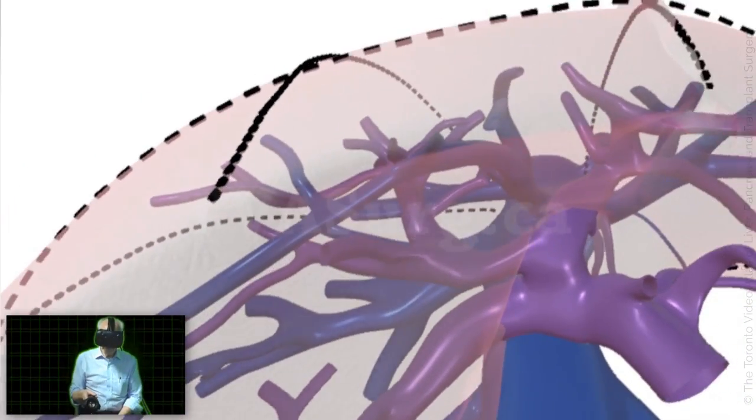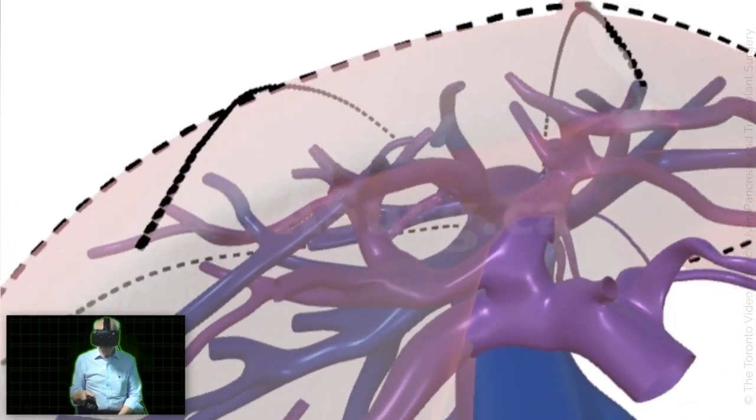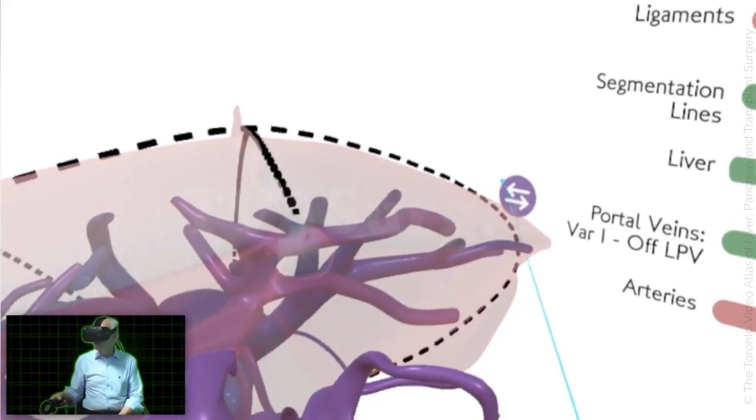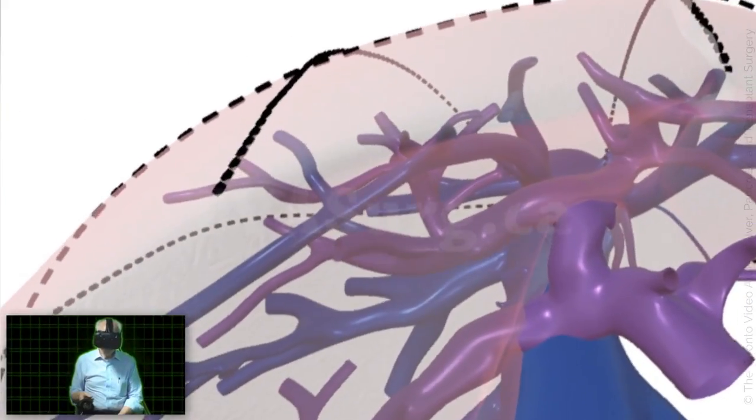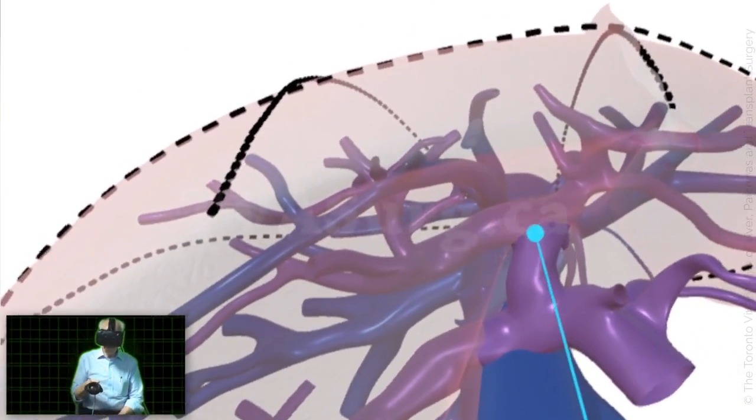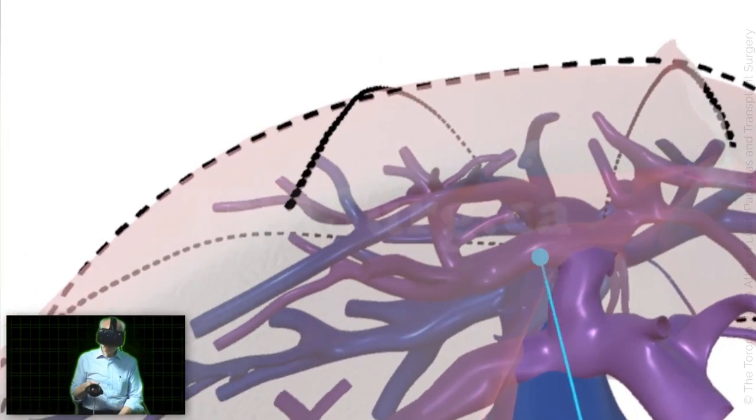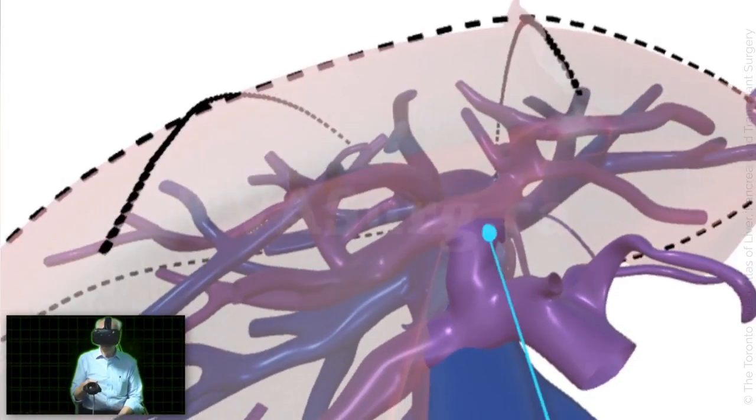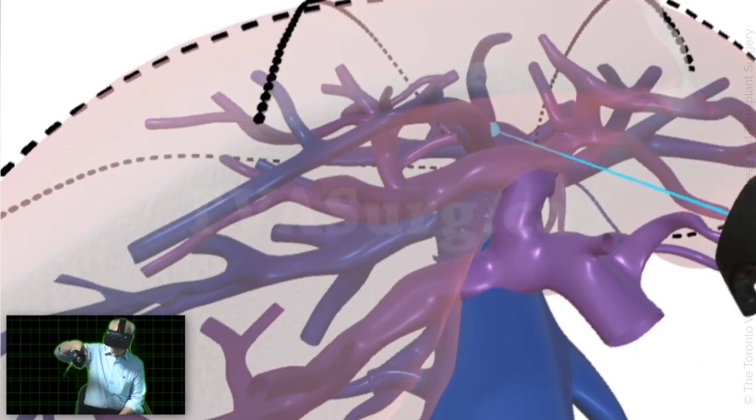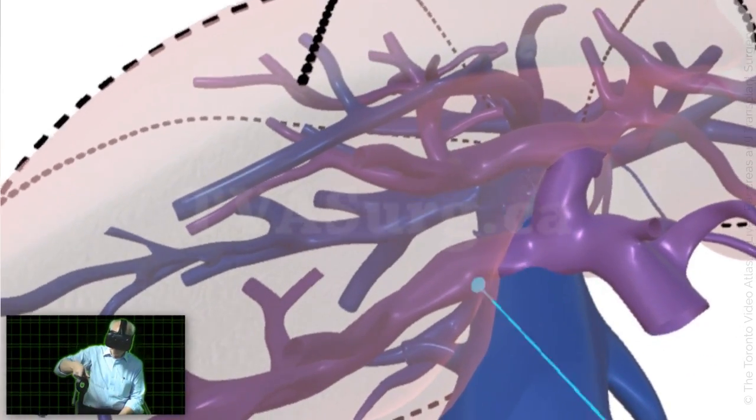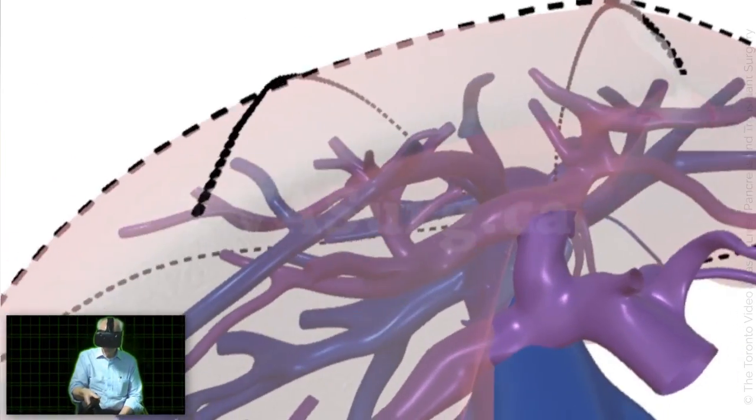The one anatomic variant that you really have to be cognizant of and watch for is this one, where the left portal vein comes off way over here. Now, some say this is the left portal vein, sorry, the right portal vein coming off the left, or you can say this is the bifurcation here and this is an early takeoff of six, seven. That's sort of wordsmithing.